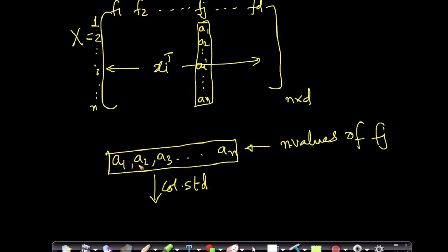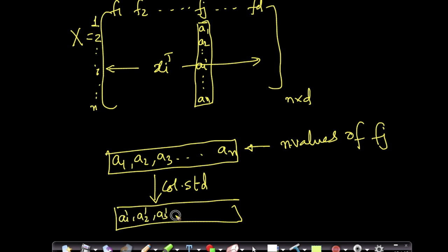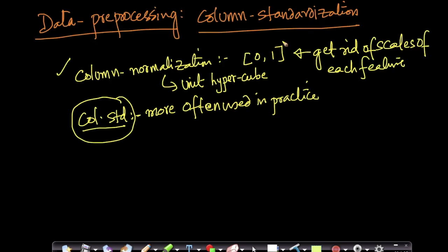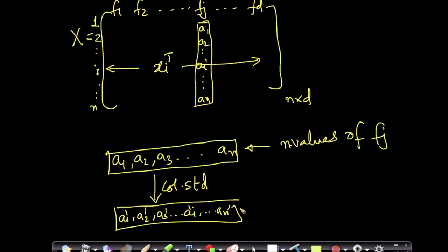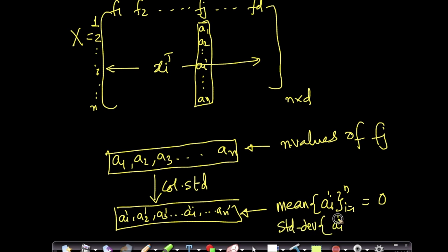In column standardization, I take the raw data — which could be in any scale, kilograms, inches, I don't care — and convert it into transformed values a1', a2', a3', ..., aN'. In the transformed data, I ensure that the mean of the standardized values equals 0 and the standard deviation equals 1.